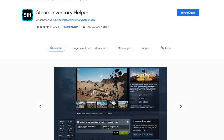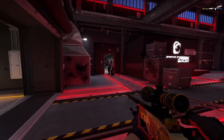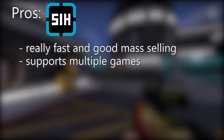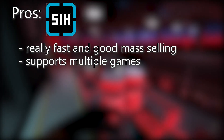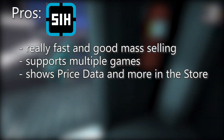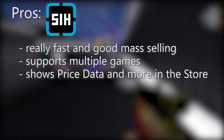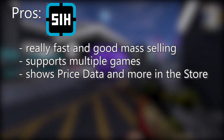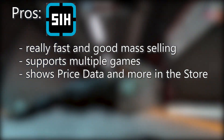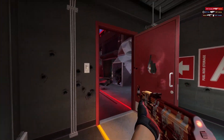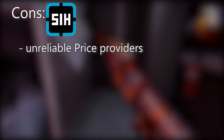The second plugin we want to talk about is Steam Inventory Helper — it's by far the most famous Steam plugin and features some really cool things. The pros are that it has really fast and good mass selling and supports multiple games and Steam items. So if you're also selling TF2, Rust, or Unturned items, you don't have to worry about prices not loading. It also shows you price history and other information for games when you're on their store page — you can click on a game and see the historical minimum price and where to buy it cheapest.